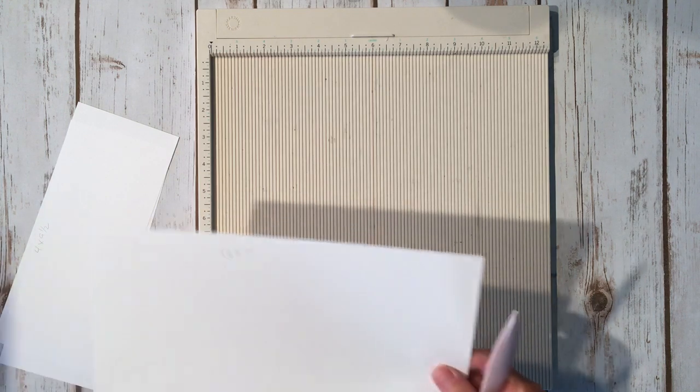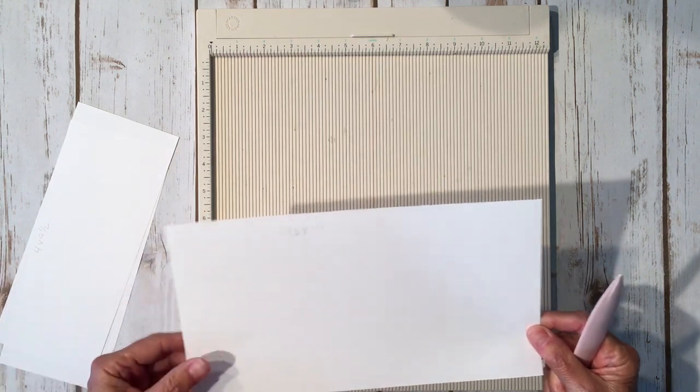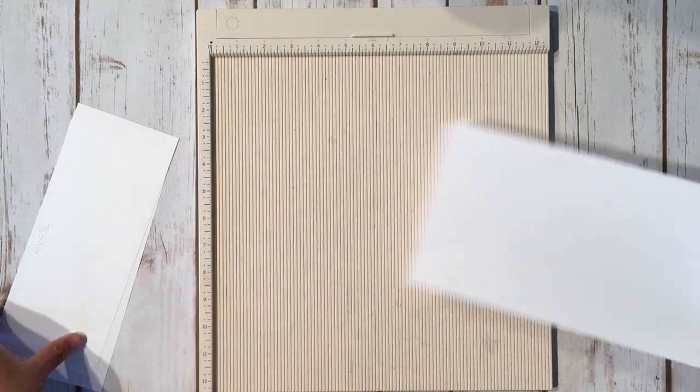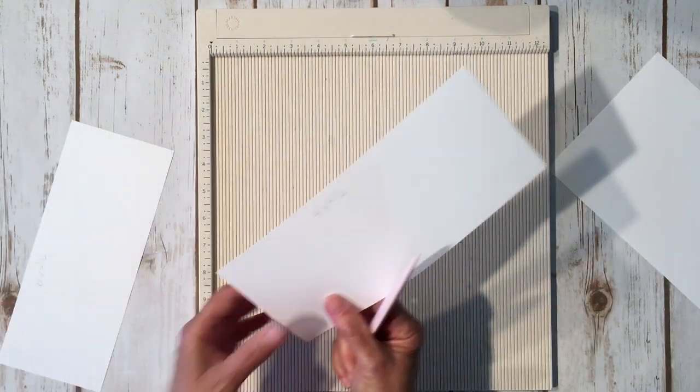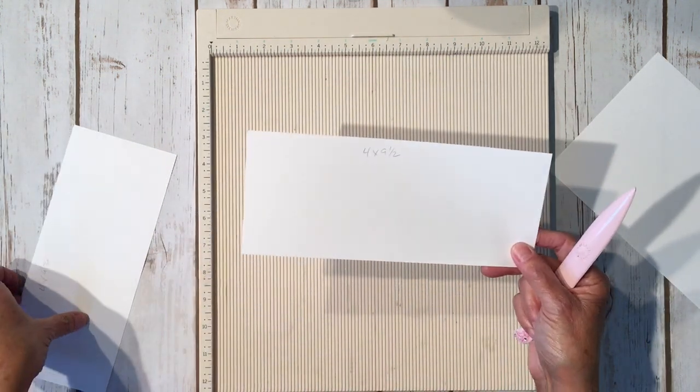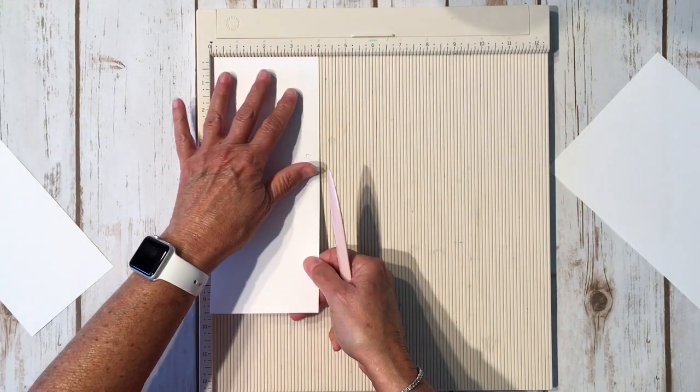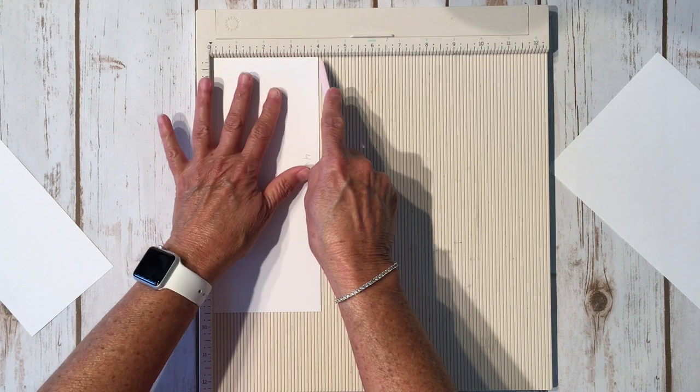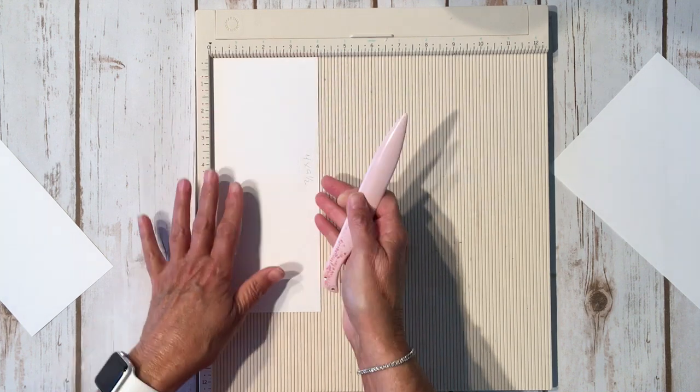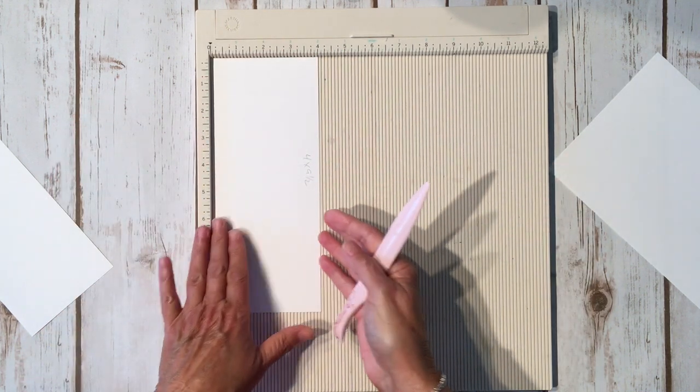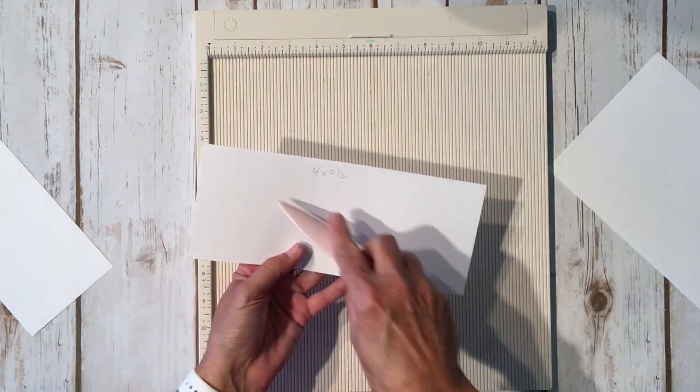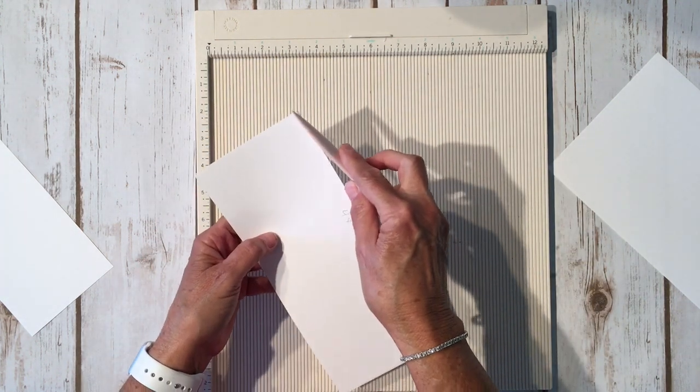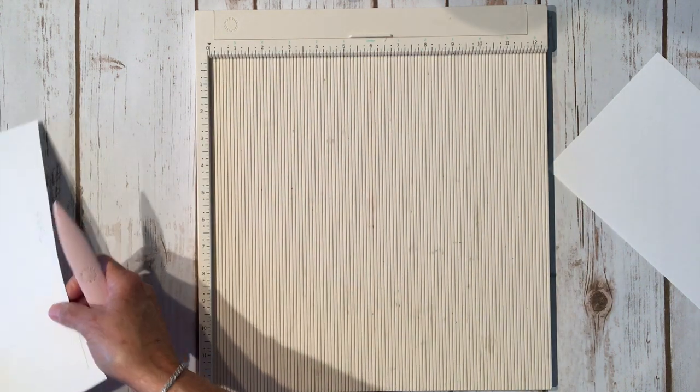So here we go. The first piece you're going to need to make the base is a piece that's six by eleven. Then you're going to need two pieces that are four by nine and a half. Now when I cut these at four inches, I'm just on the inside line, so they're just shy of four, so that way when they do fold they're going to fold a little bit nicer. So it is four by nine and a half, but just cut it on the inside of the line on your paper trimmer for the four inches.